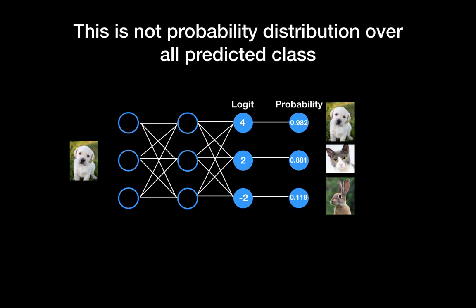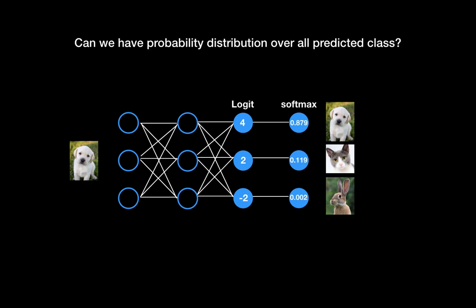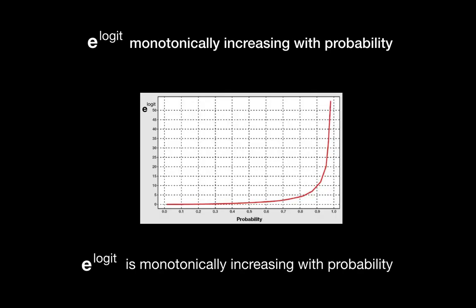However, this situation is very similar to using a sigmoid function at the end — it is not a true probability distribution over all predicted classes, because summing all the probabilities does not equal one. We need softmax. Softmax guarantees that summing all output values equals one. The softmax formula uses e to the power of the logit as input.